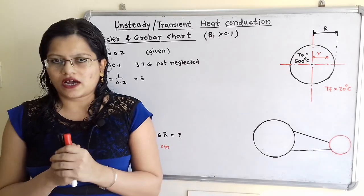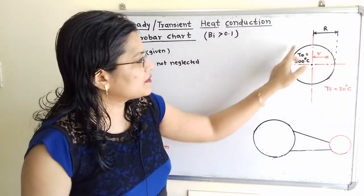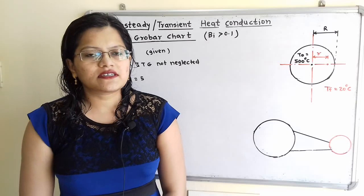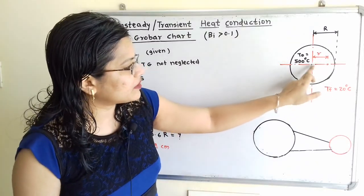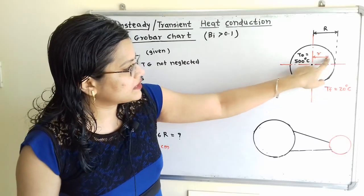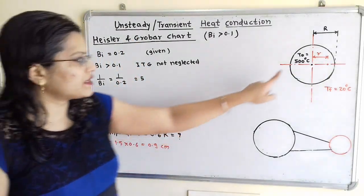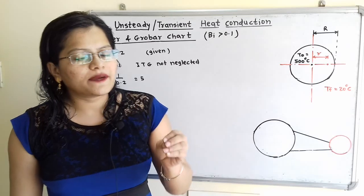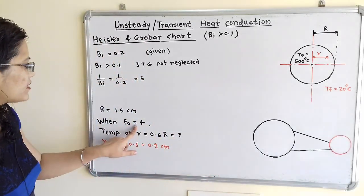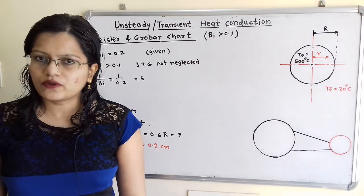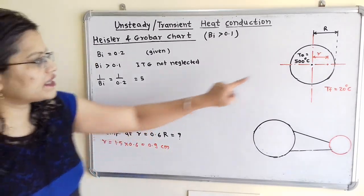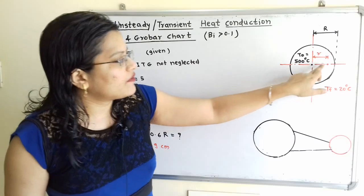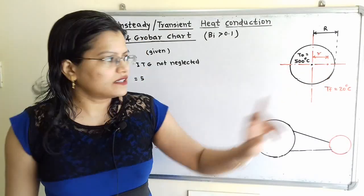We will understand what small r means. The sphere is symmetric about its center point, so small r is the distance of any point from the center of the sphere. If we select a point, then the distance small r equals 0.9 cm, and at this point we have to find out the temperature.